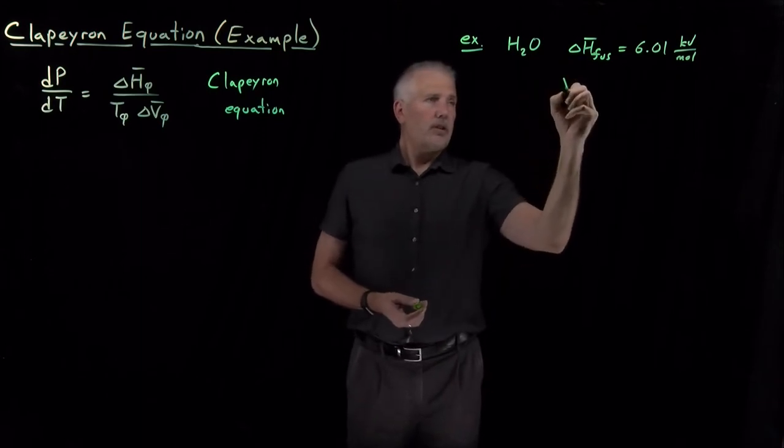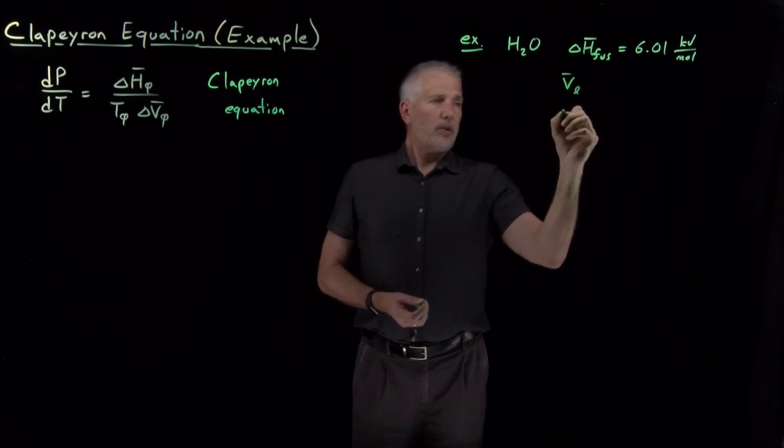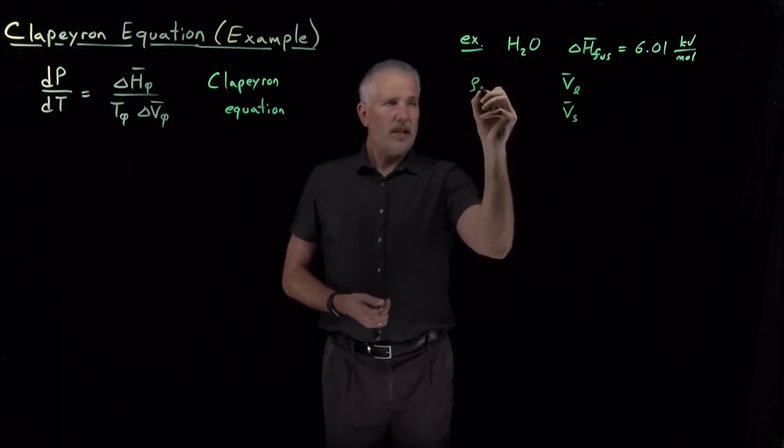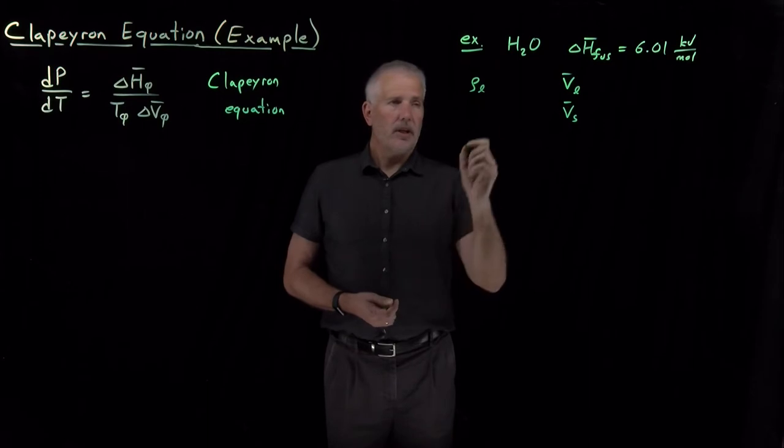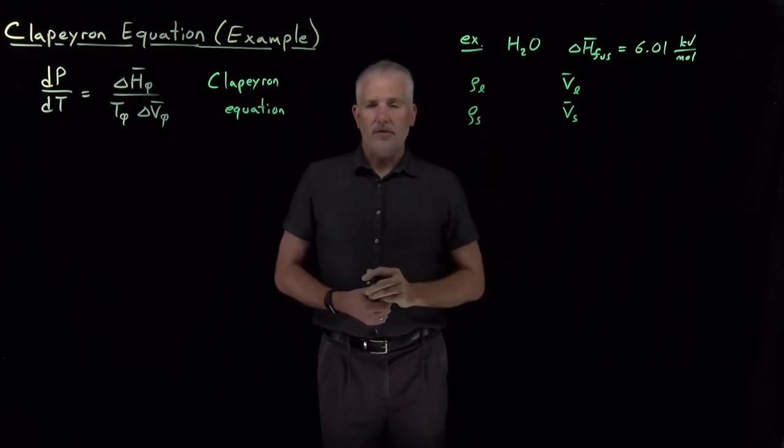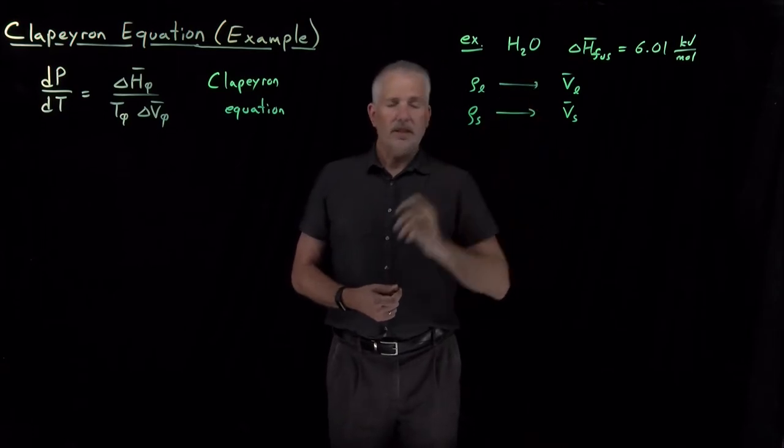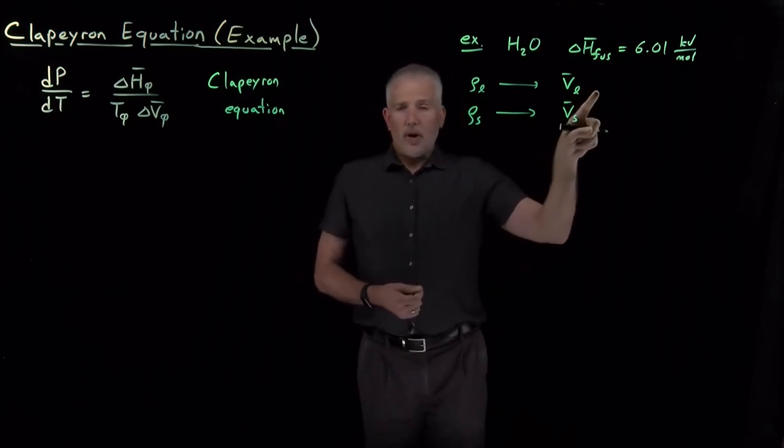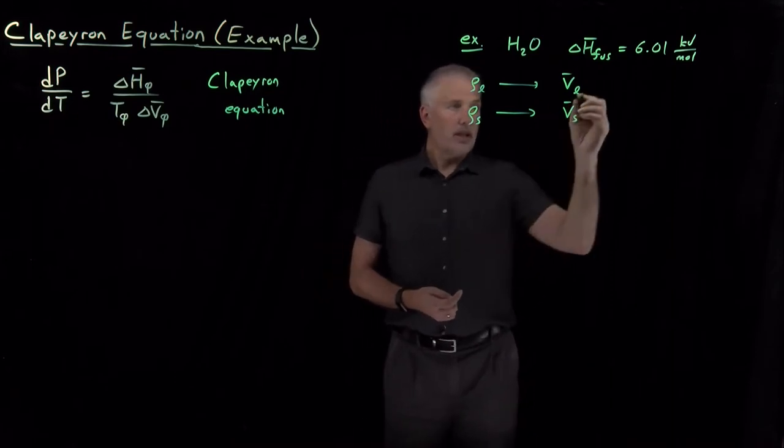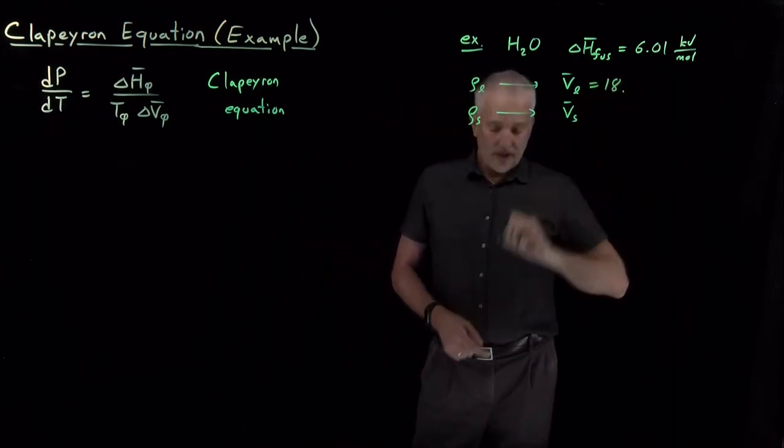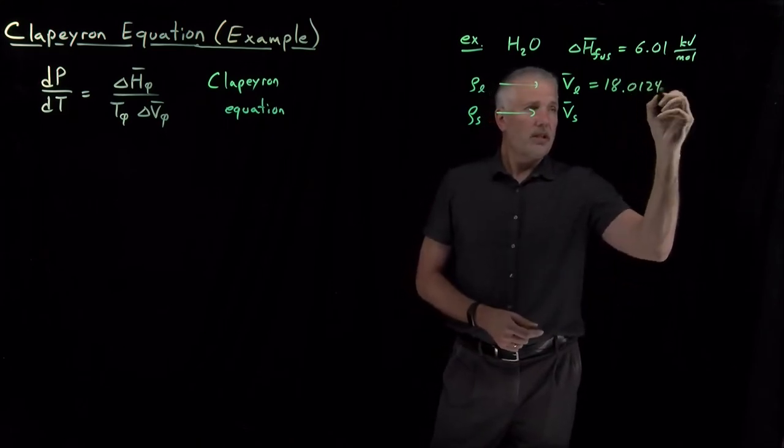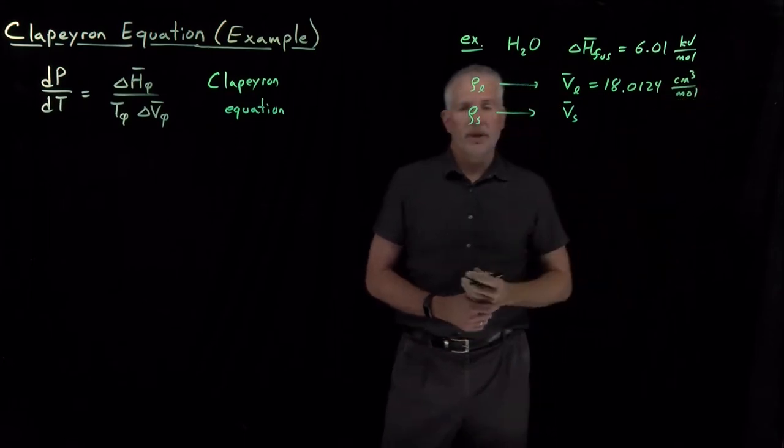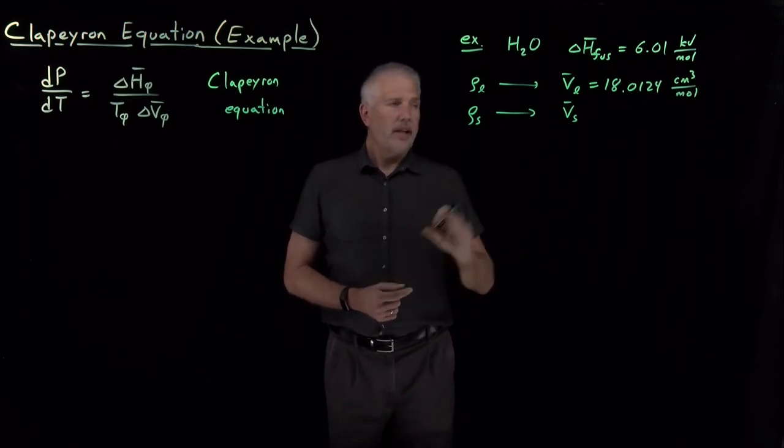I can also tell you the molar volume of the liquid, the molar volume of the solid. Probably the easiest way to think about those is we could look up the density of the liquid, pretty close to one gram per cubic centimeter. Look up the density of ice, and then convert those densities to molar volumes relatively easily. I'll just give you the molar volumes. One mole of water, 18 grams of water, takes up about 18 milliliters. That molar volume turns out to be 18.0124 cubic centimeters, the volume occupied by one mole of liquid water at its freezing point.